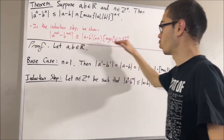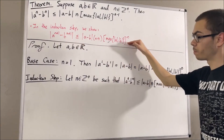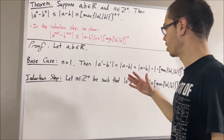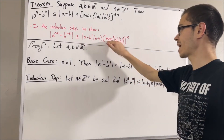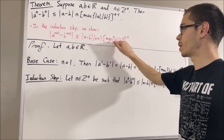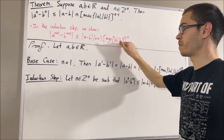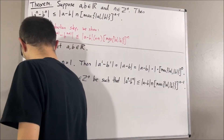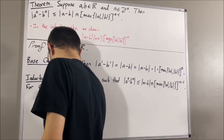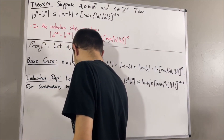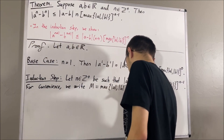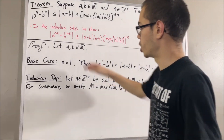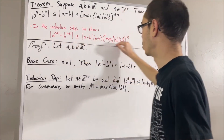For convenience, we're going to write the maximum of absolute value of a and absolute value of b by the letter capital M. And now we're going to show that this inequality is true.